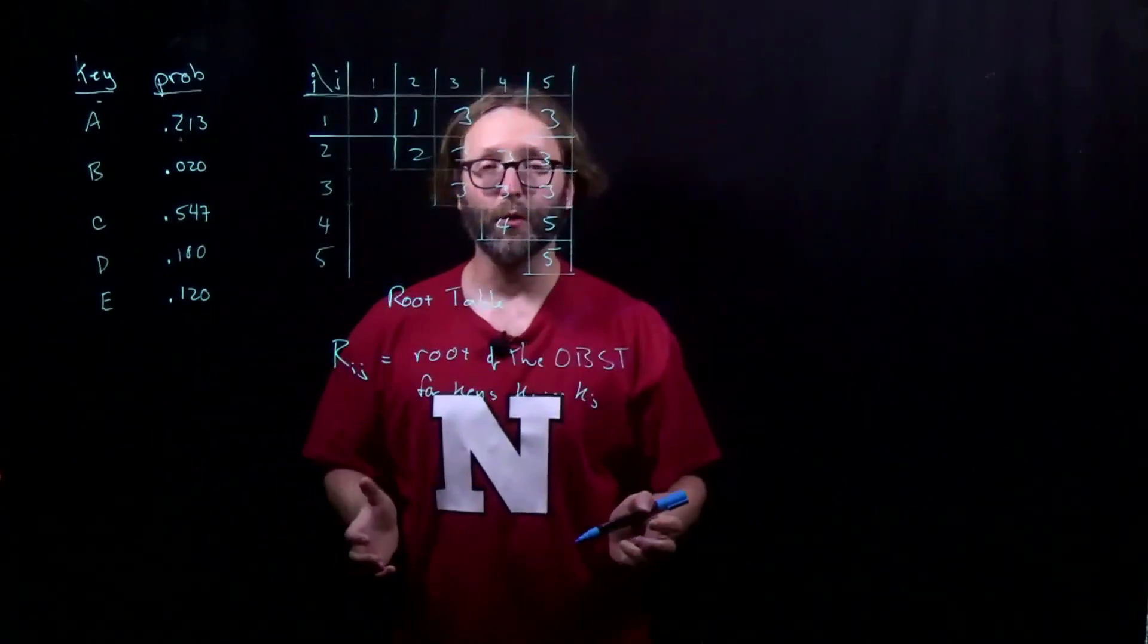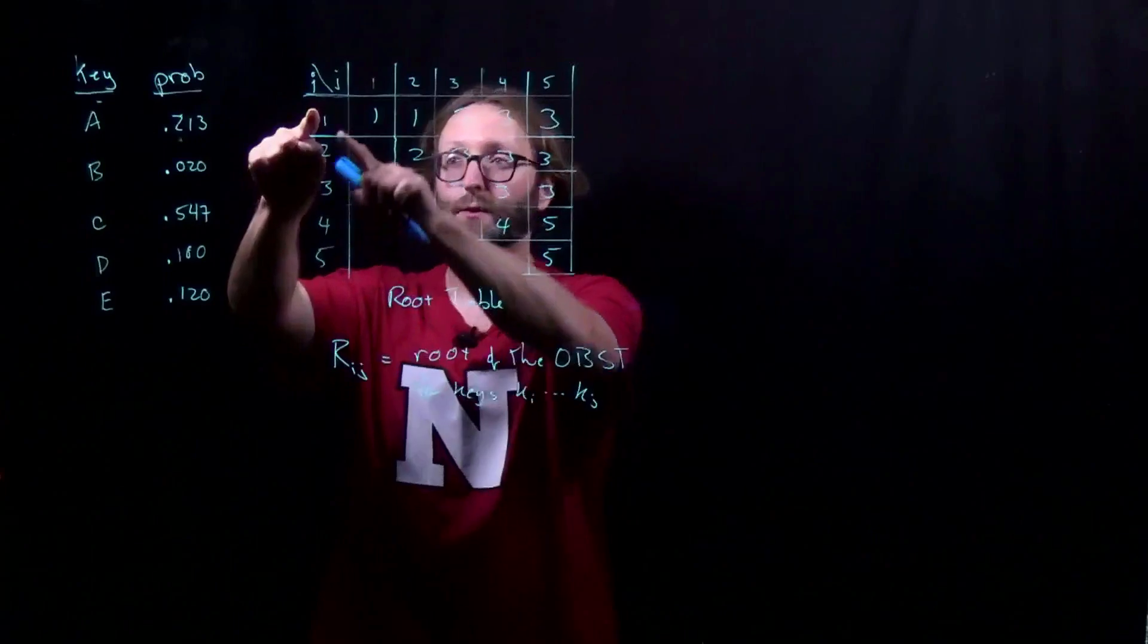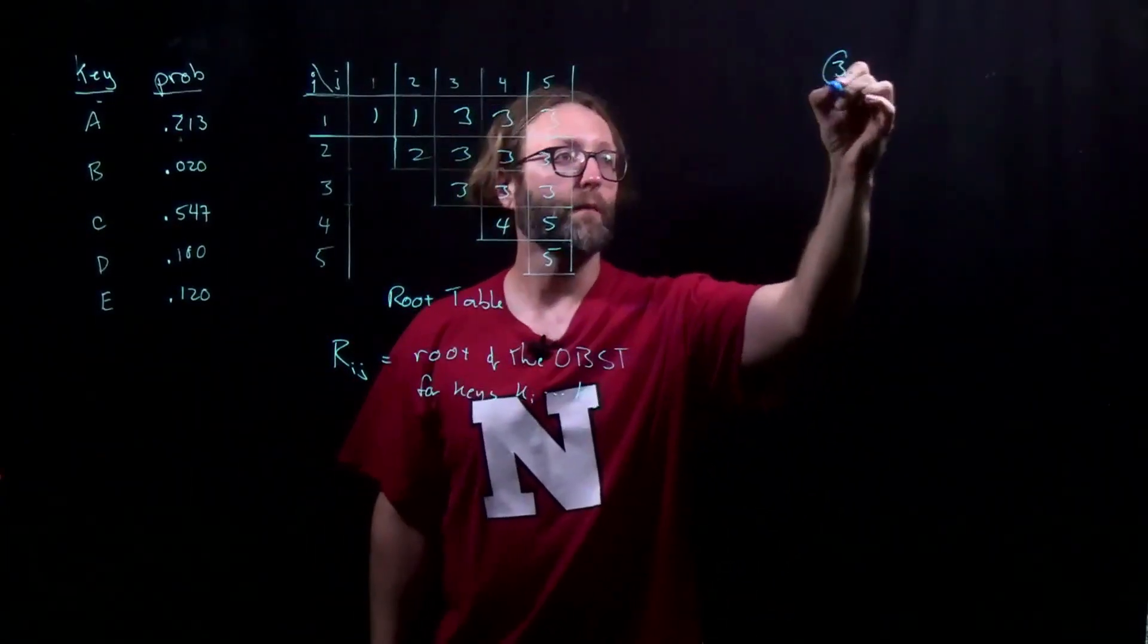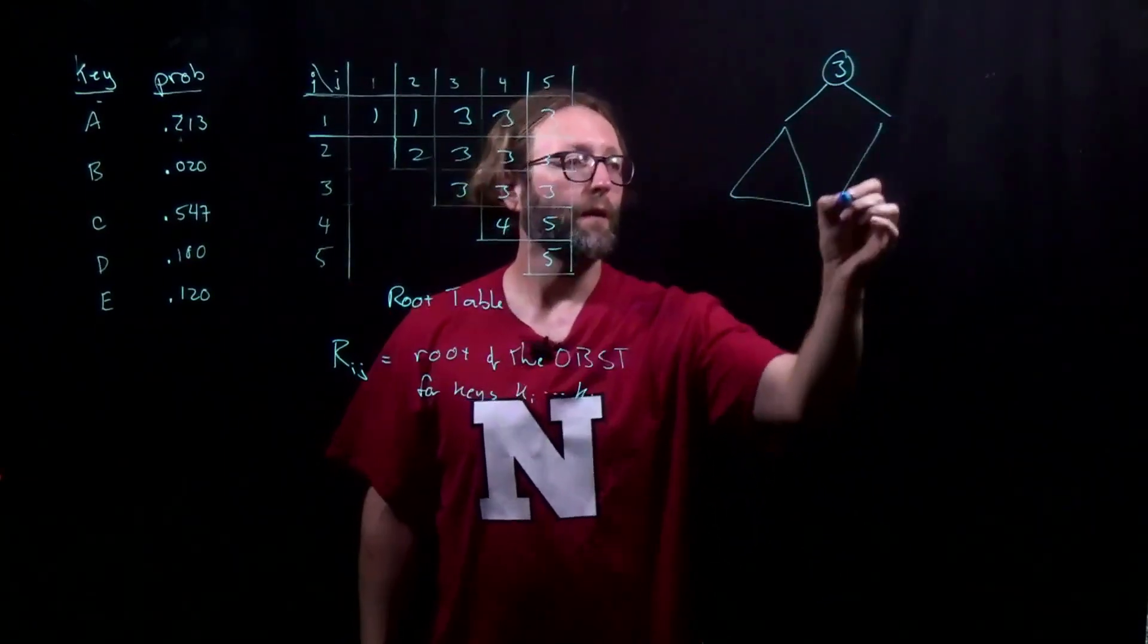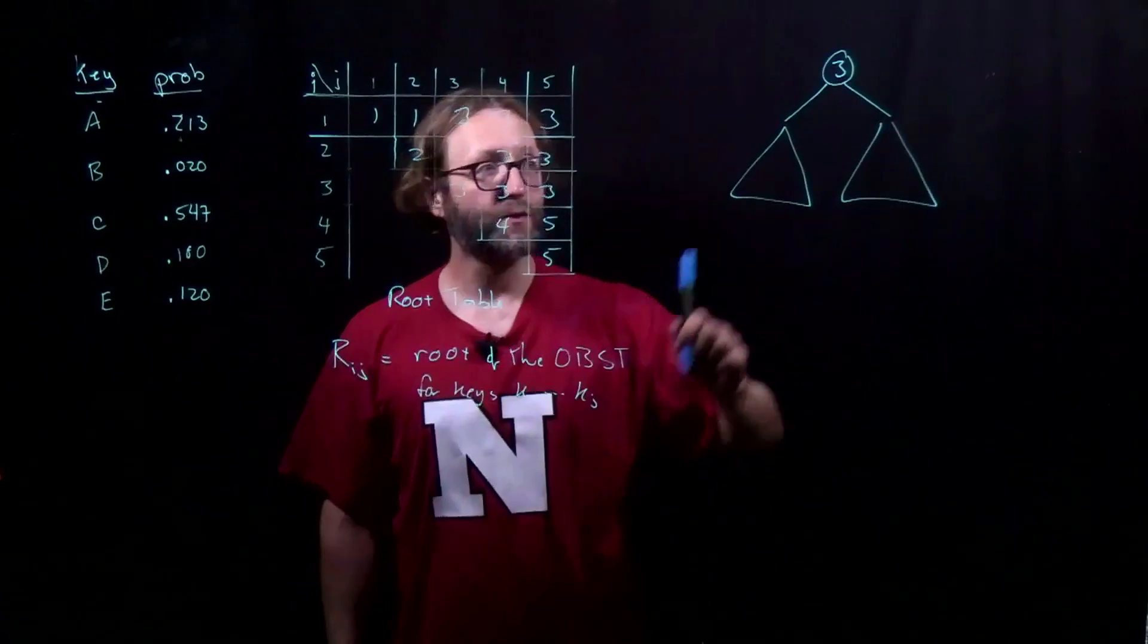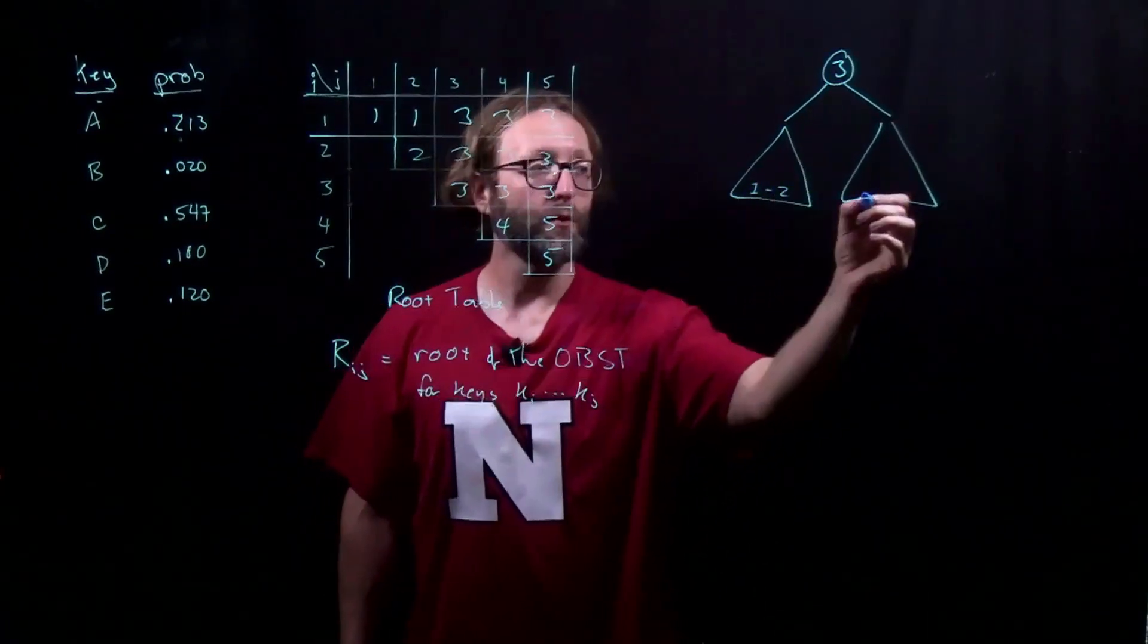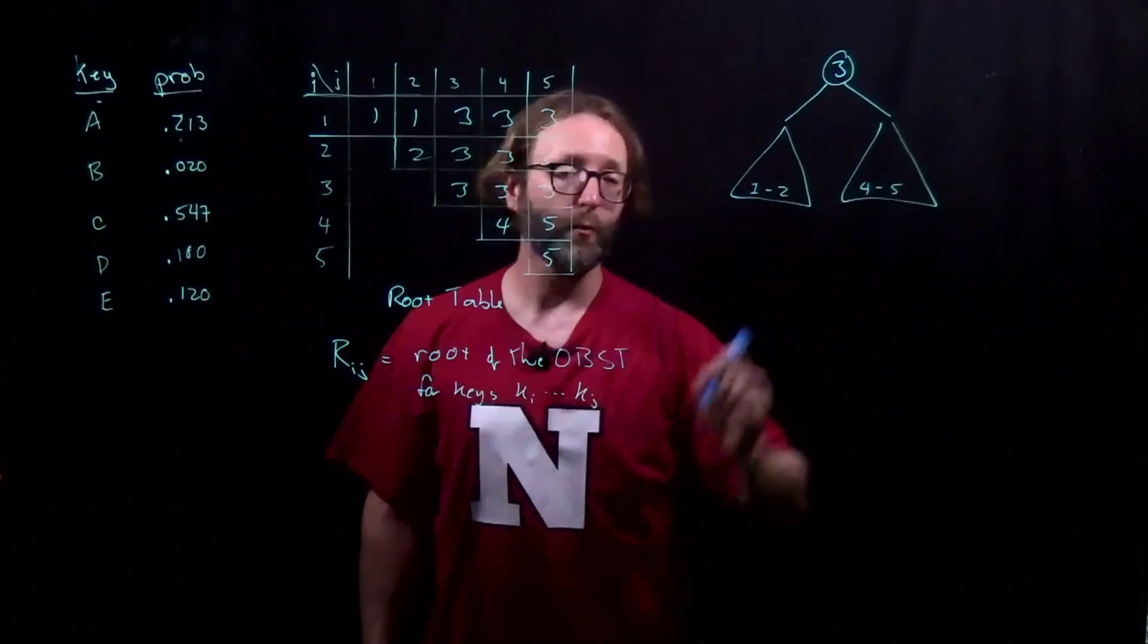So the first question I'm going to ask is what is our root of all of the keys, 1 through 5? It's going to be 3. That means that I need to construct a tree with 3 as the root and keys 1 through 2 will be in the left subtree and keys 4 through 5 will be in the right subtree.